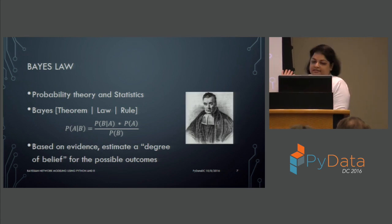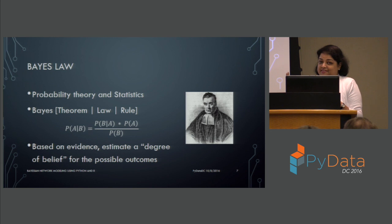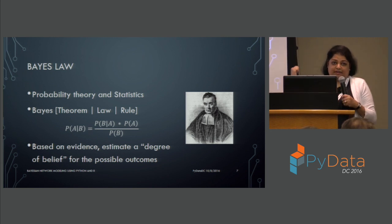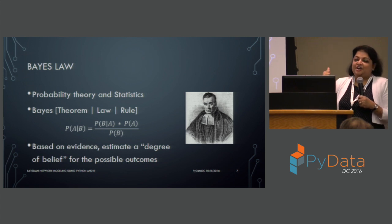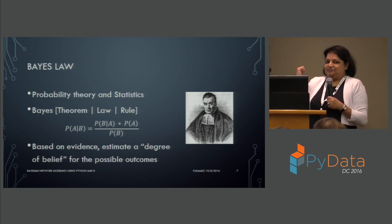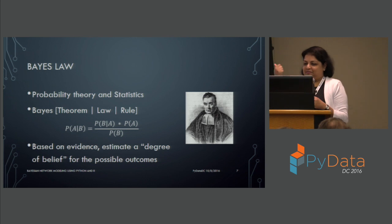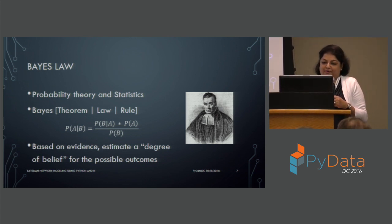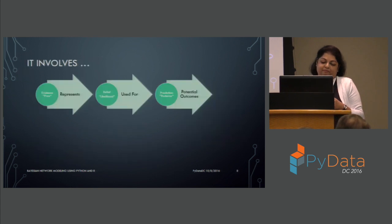This is Thomas Bayes, who came up with Bayes' law. It's very interesting how he came up with it — he was not credited for it when he was alive; it became more popular posthumously. If you're interested in the history of mathematics, I would definitely encourage you to check it out and learn more about him and how Bayes' law came about.